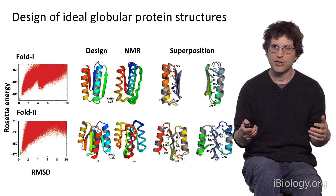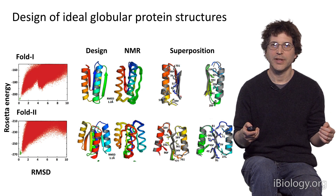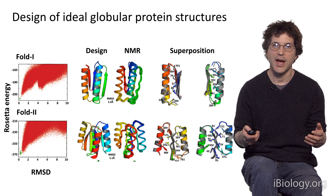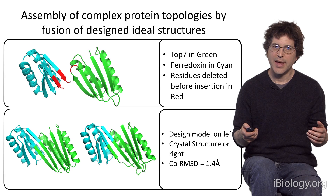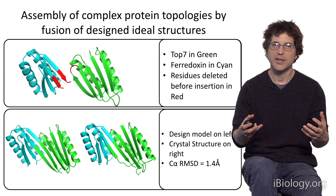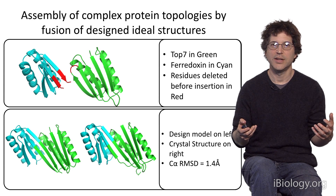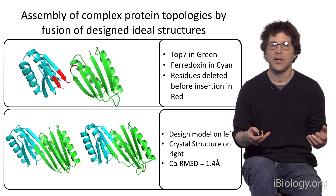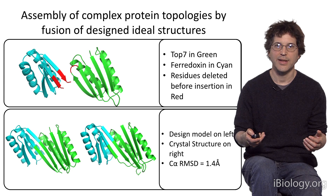We've been able to make such structures pretty routinely now. We can make brand new globular protein structures quite effectively — in fact, a new student coming to my laboratory is typically assigned the project of making up a brand new protein structure, designing it, and then characterizing the design in the laboratory. We can also put together idealized building blocks to make larger and more complex structures. This shows an example of taking two idealized building blocks whose structures we'd solved, fusing them together, and the crystal structure comes out exactly as we designed it.